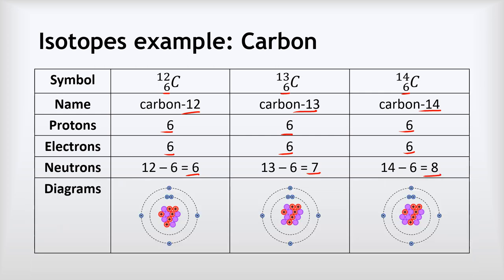If we look at their diagrams, you can see that they've all got the same number of positive protons, that's 6 protons in each one, but you can see that the pink neutrons is going up one each time. So we start with 6, then we get 7, and 8 in carbon-14.